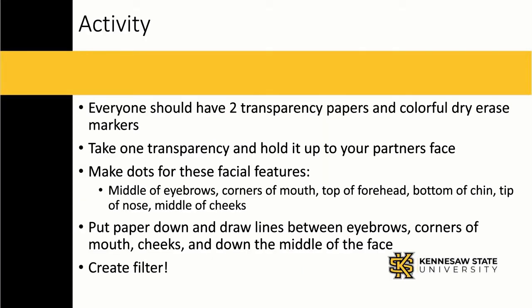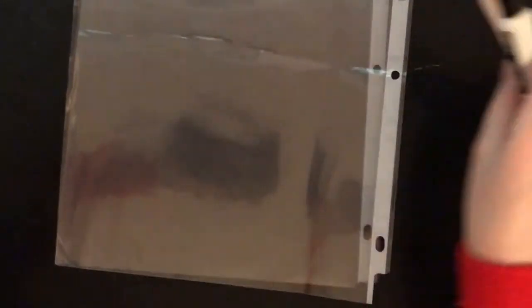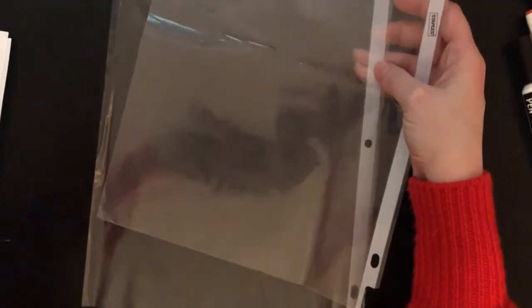Now that we've learned a little bit about facial identification and recognition, we're going to do an activity where we create our own facial filters. Please pause the video if you want to read the activity slide before I go into detail about how to do the activity. You will need several dry erase markers, and each student will need two page protectors or transparency papers. It is a good idea to write this on the board so that students can understand what they need to be doing if they're doing it with a partner, but this can also be translated to an at-home activity.